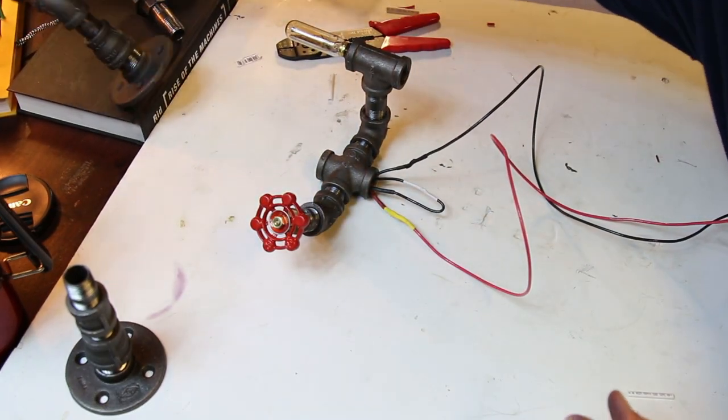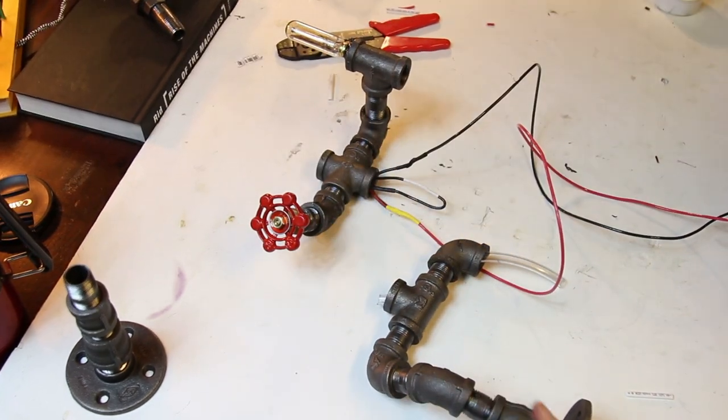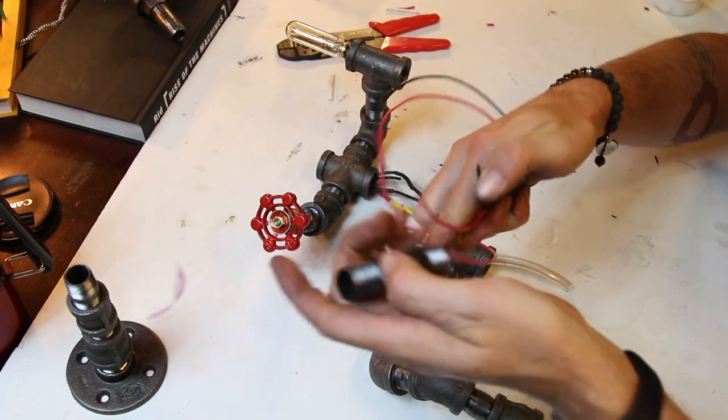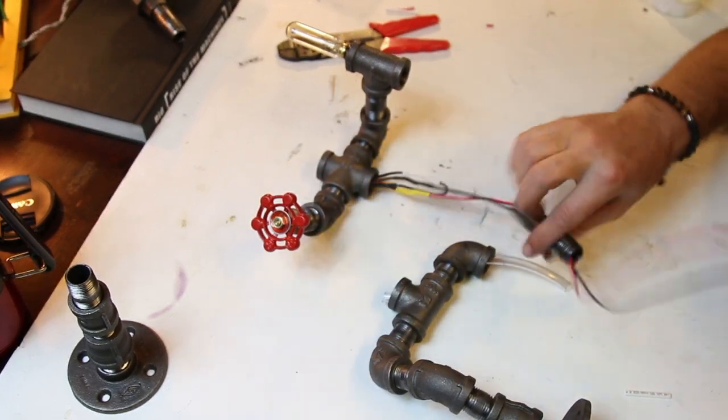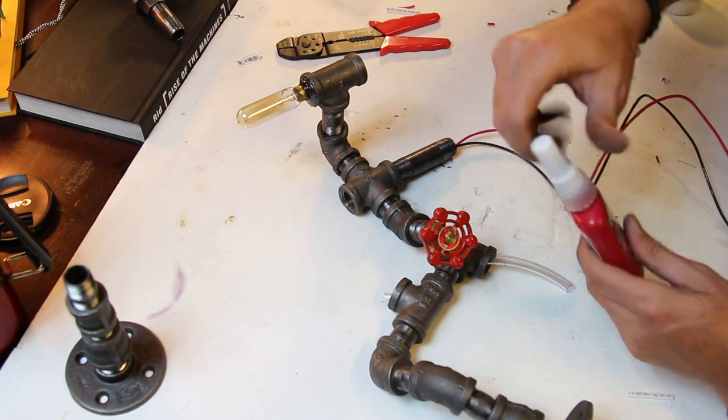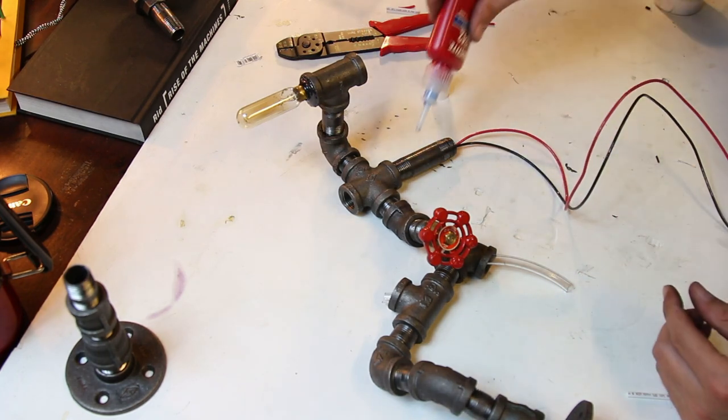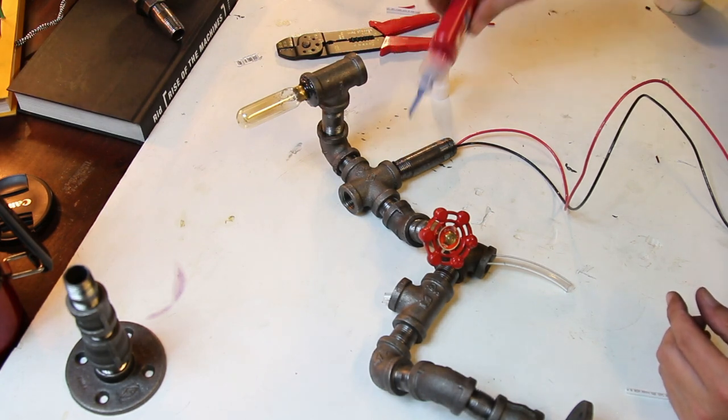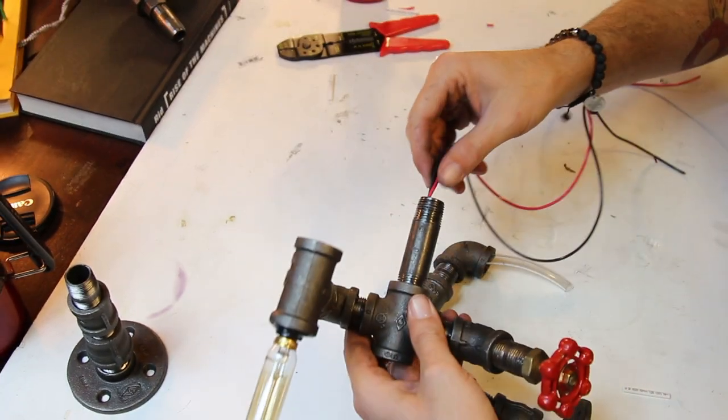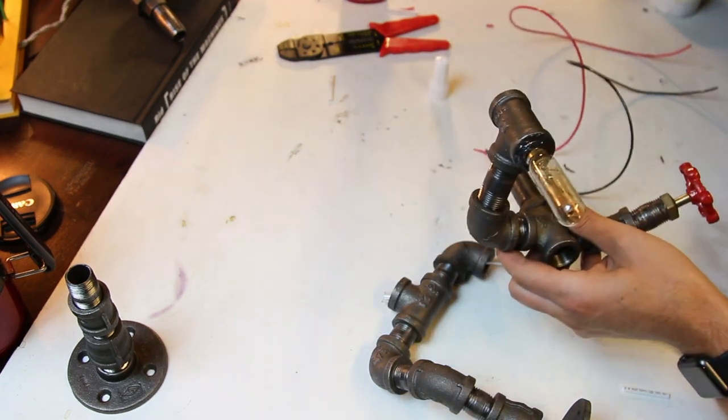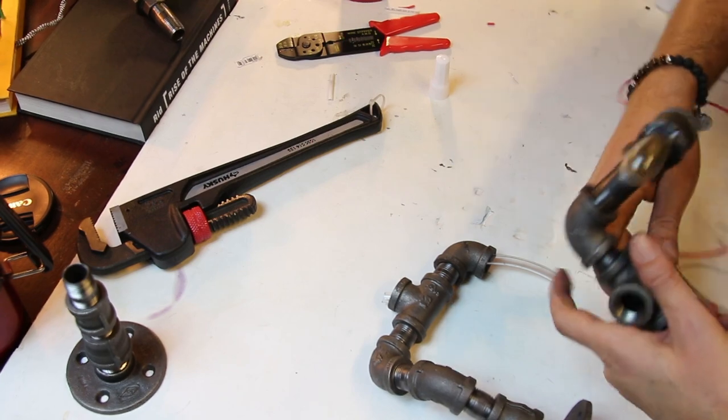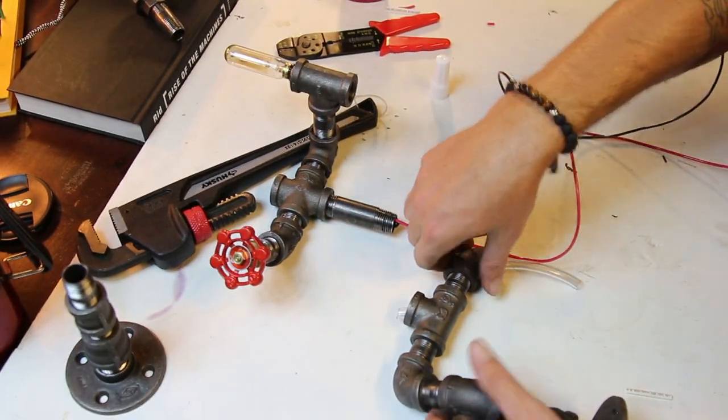And then, so we have the body here and the waist. So now all we have to do is take these here. And again, we'll use a little bit of Loctite. And the nice thing about this is now all of our connections are nice and protected inside of here.